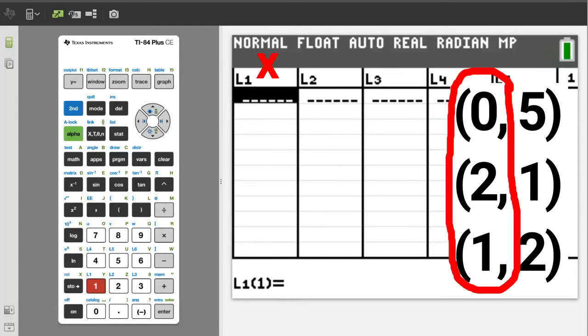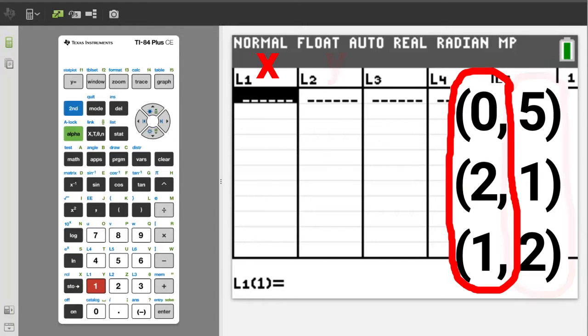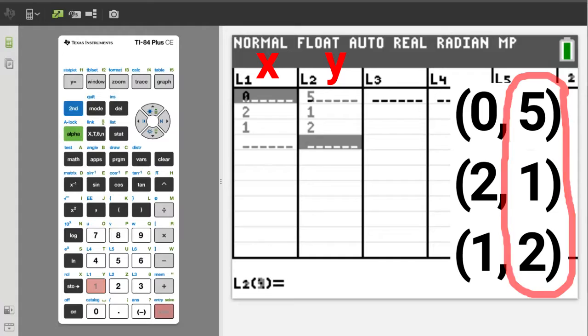Enter the x values of the three points into L1 and the y values of the three points into L2. So we have point (0,5), point (2,1), and point (1,2). After you have entered the three points,